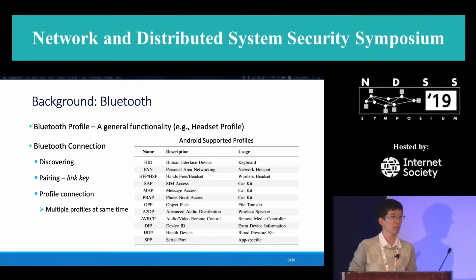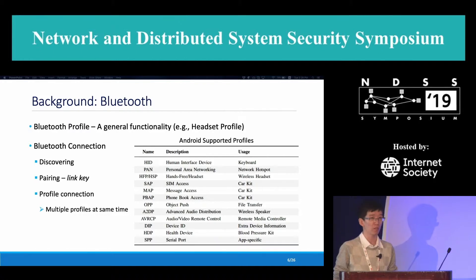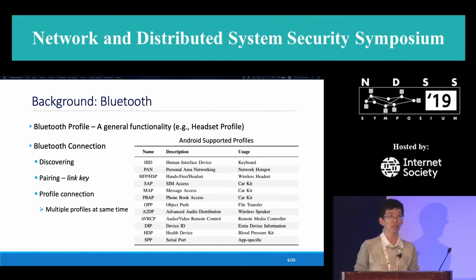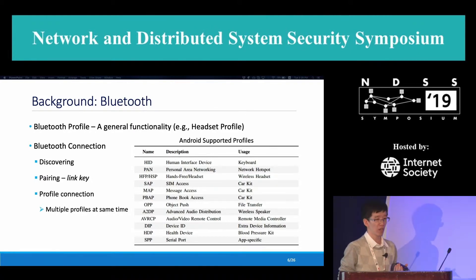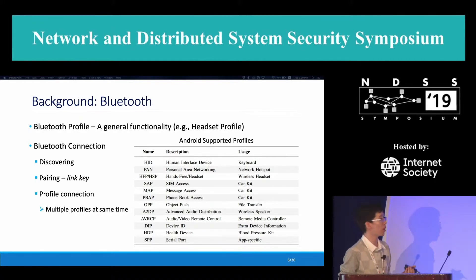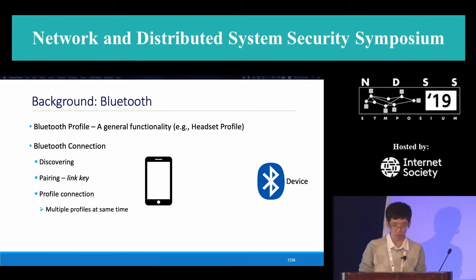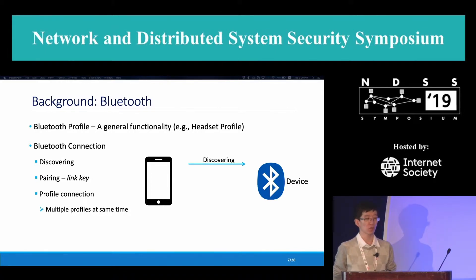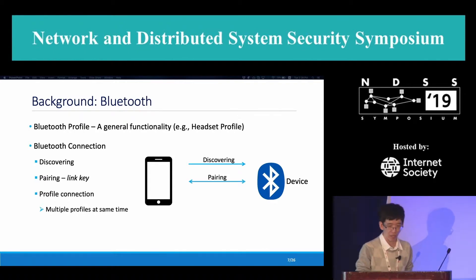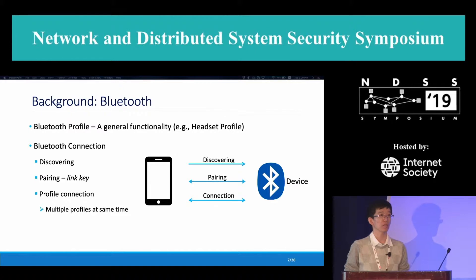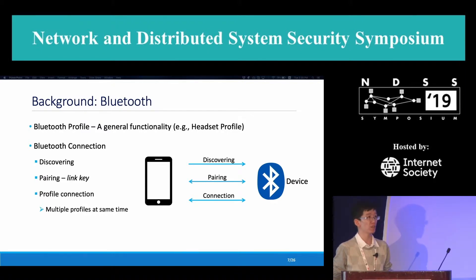Let me introduce some background about Bluetooth. A very important concept is the Bluetooth profile, which defines the general functionalities. For example, the headset profile defines the usage and interface of the headset device. This table shows the supported profiles on Android — you can see many useful profiles for users. To establish a Bluetooth connection from the phone to a device, first the phone will discover the device, then they negotiate a link through the pairing process, and finally they establish a connection. I want to point out that the connection is profile-centric, which means they can maintain multiple profiles at the same time.